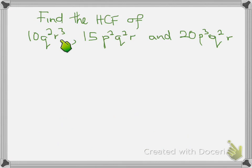15p squared q squared r, and 20p cubed q squared r. Therefore, the first step is to find the prime factors of these numbers.